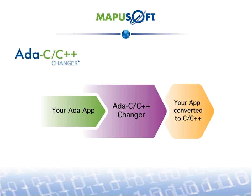ADA C/C++ Changer is a tool that automatically converts ADA code to C and C++ without having to manually rewrite. It reads the source code directly from your ADA source directories and compiles them to generate equivalent C/C++ code that is fully readable and maintainable.